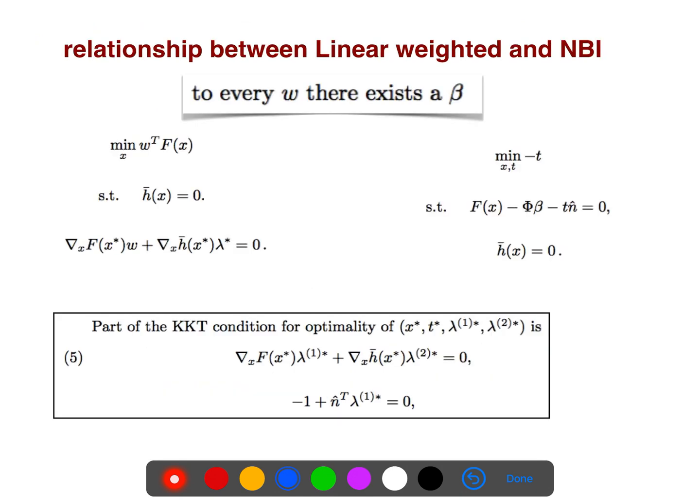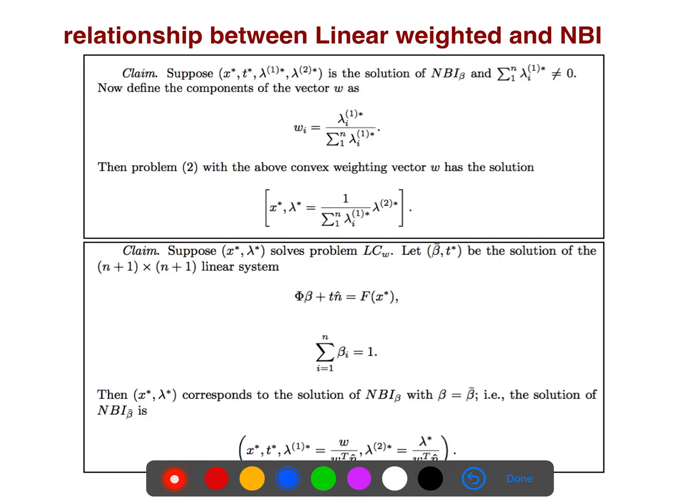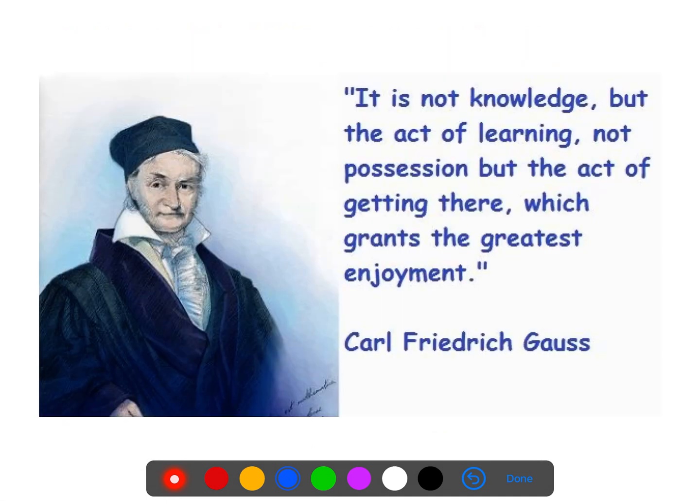And so we want to talk about the relation between linear weighted and normal boundary intersection as well. As you see, you can write the linear weighted approach here and use the KKT conditions. And you will notice that if you just put these special weights, then both of them are equivalent. It is very easy to prove the claim that they are equivalent.